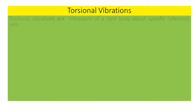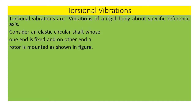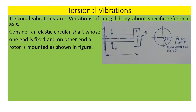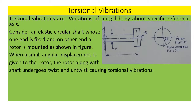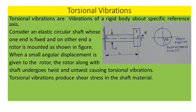Torsional vibrations are vibrations of a rigid body about a specific reference axis. Consider an elastic circular shaft whose one end is fixed and on the other end a rotor is mounted, as shown in figure. When a small angular displacement is given to the rotor, the rotor along with the shaft undergoes twist and untwist, causing torsional vibrations. Torsional vibrations produce shear stress in the shaft material.